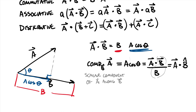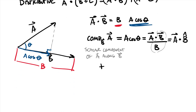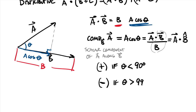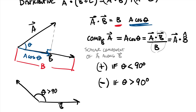Note that the scalar component can be positive or negative. It is positive when theta is less than 90 degrees — meaning a and b are generally going in the same direction. It is negative when theta is greater than 90 degrees, such as when a is pointing back in the opposite direction from b. A negative scalar component tells us the two vectors are going generally in opposite directions.